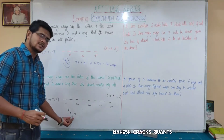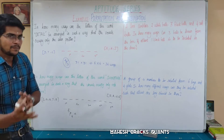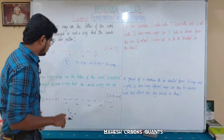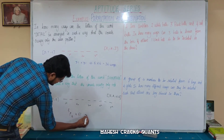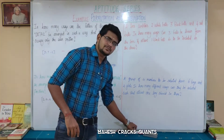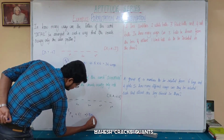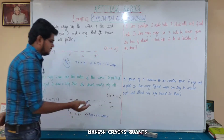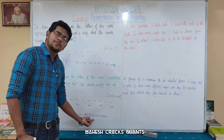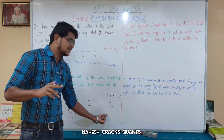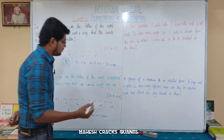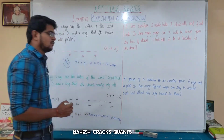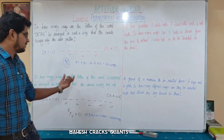Once four vowels are placed in the odd positions, the remaining five spaces will hold the five consonants, arranged in 5 factorial ways. So the answer is 5P4 × 5 factorial. 5P4 expands to 5 × 4 × 3 × 2 = 120, and 5 factorial is also 120. So 120 × 120 = 14,400. The word SIGNATURE can be arranged in 14,400 ways with vowels in odd positions.